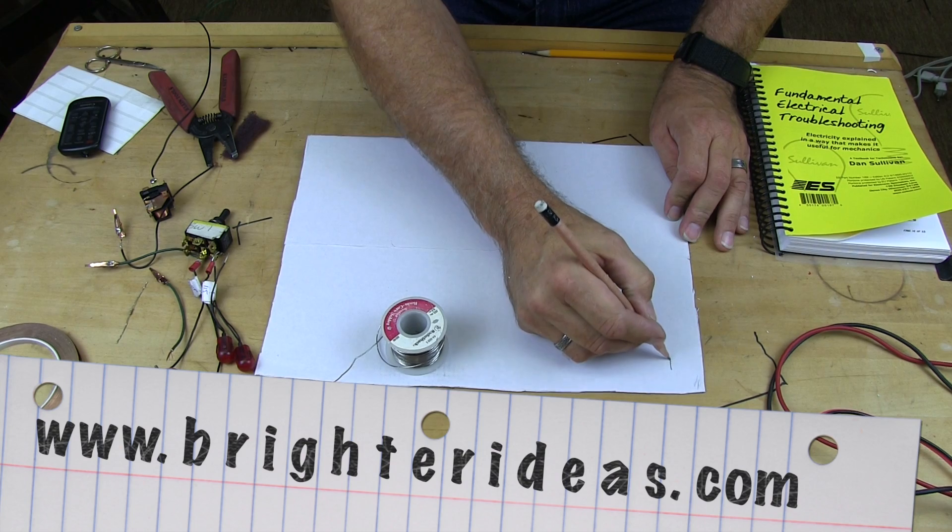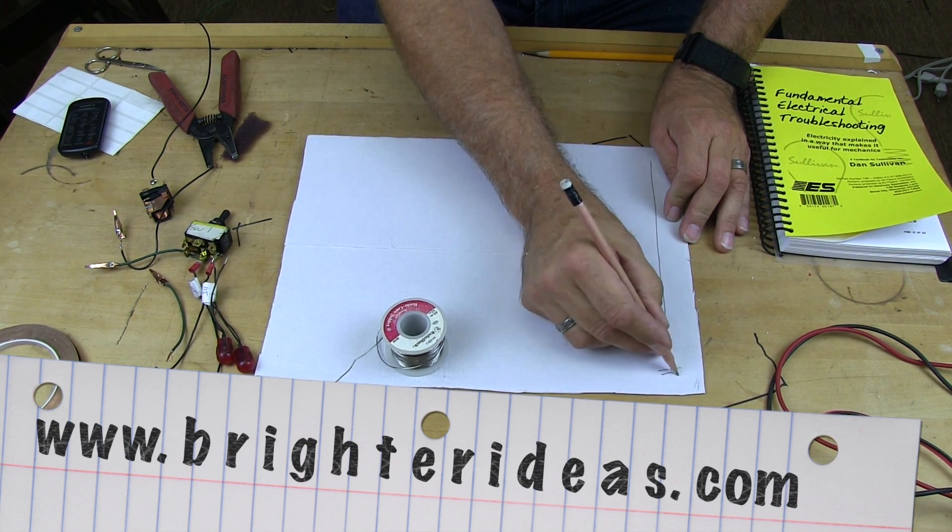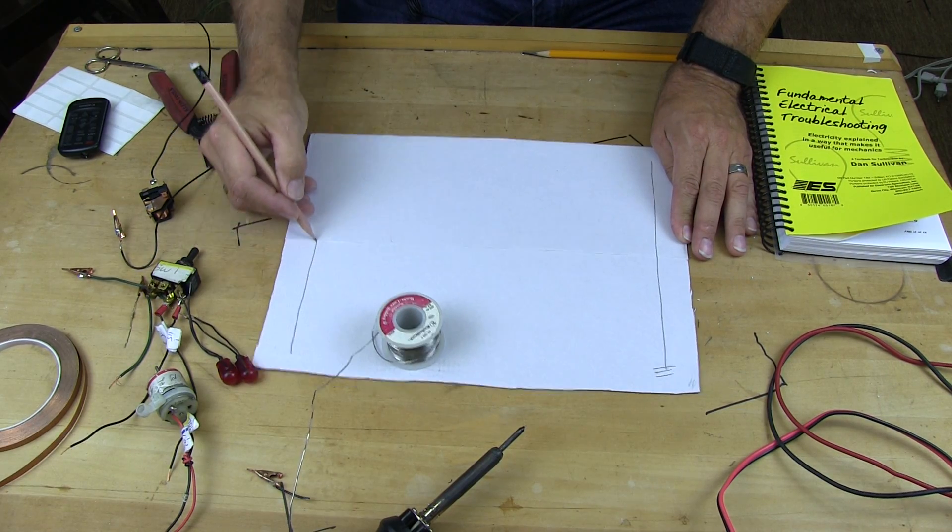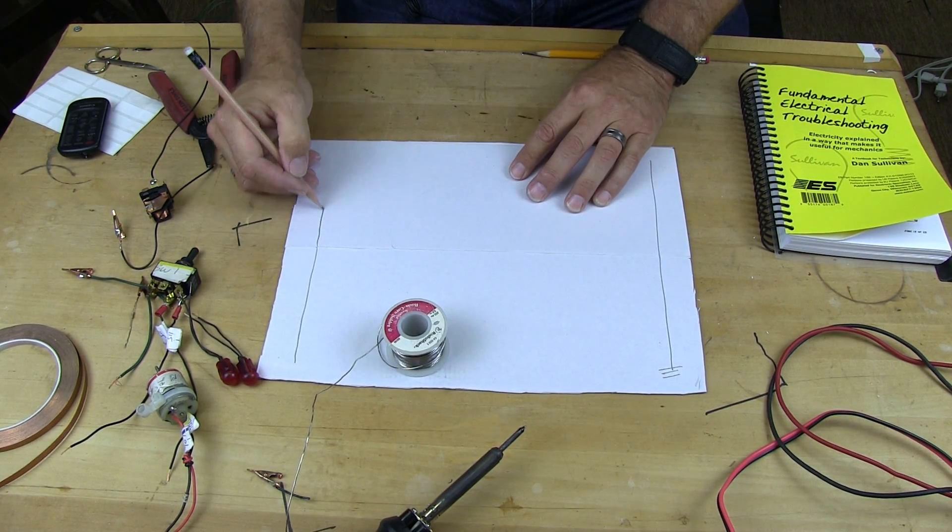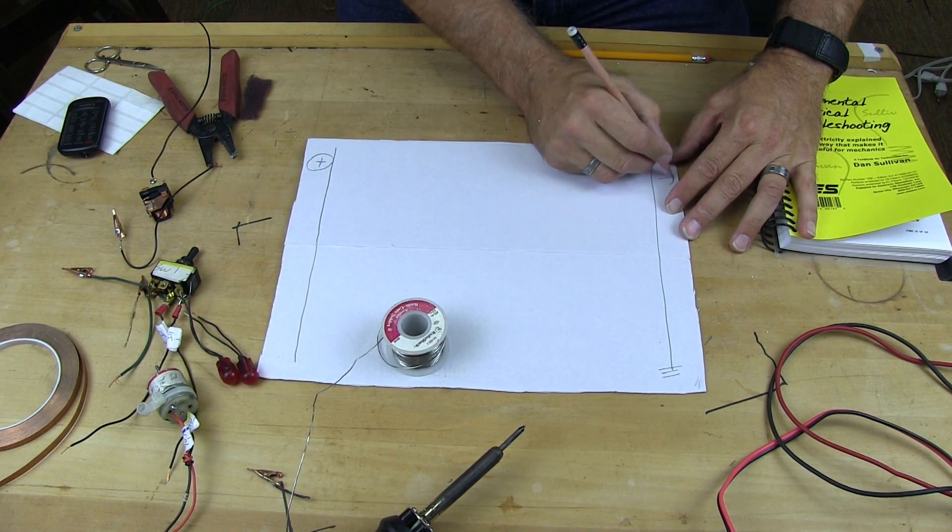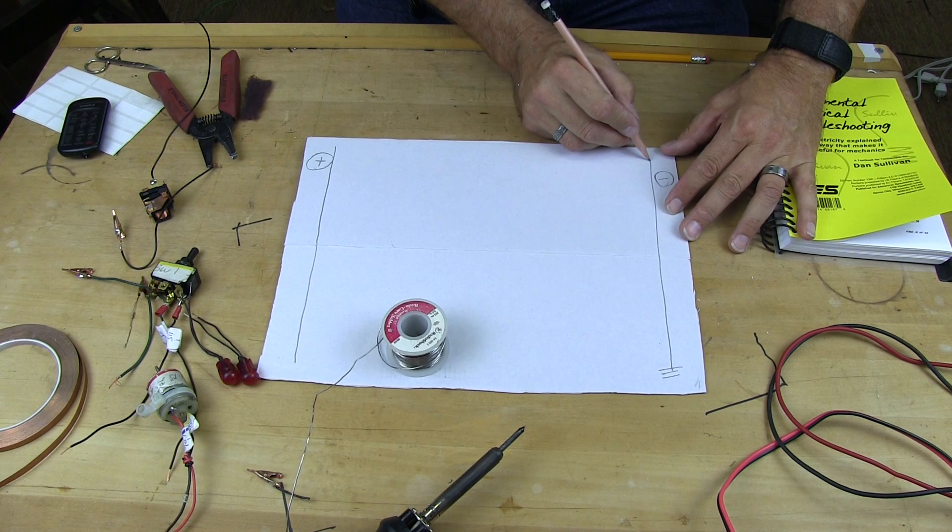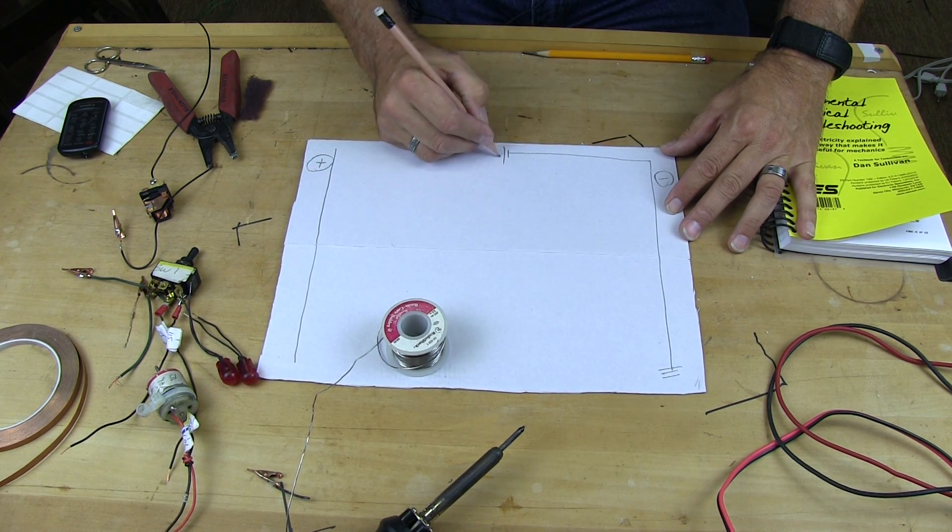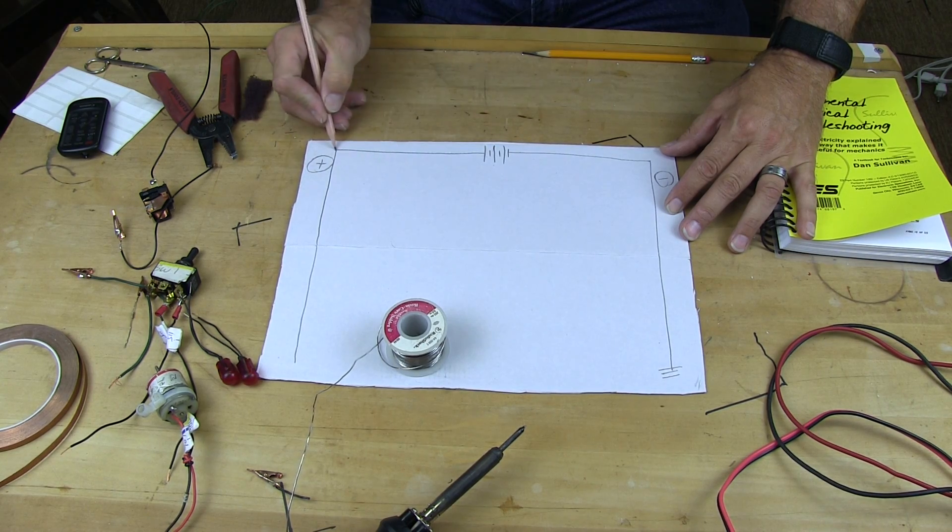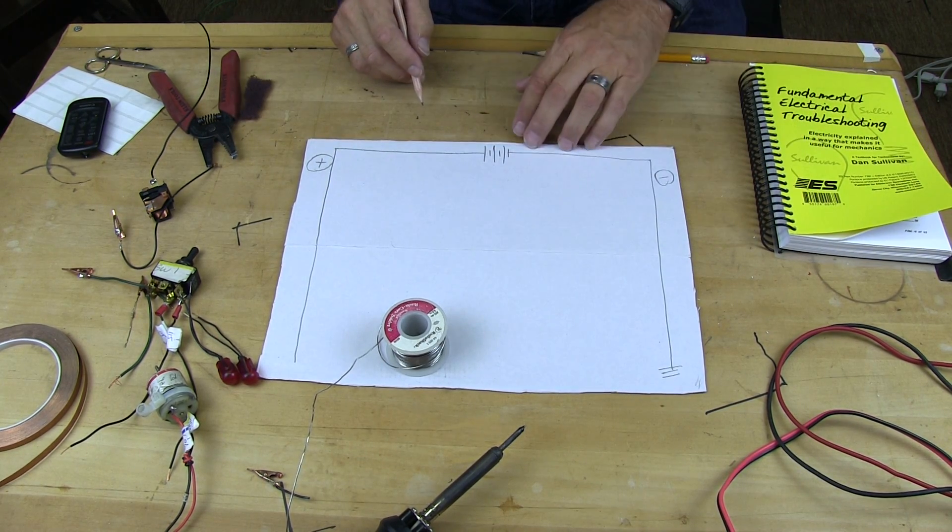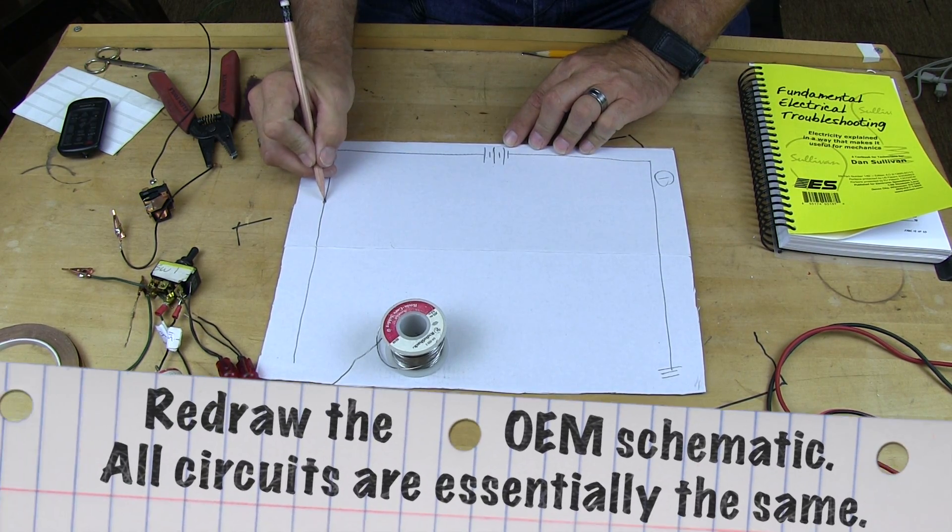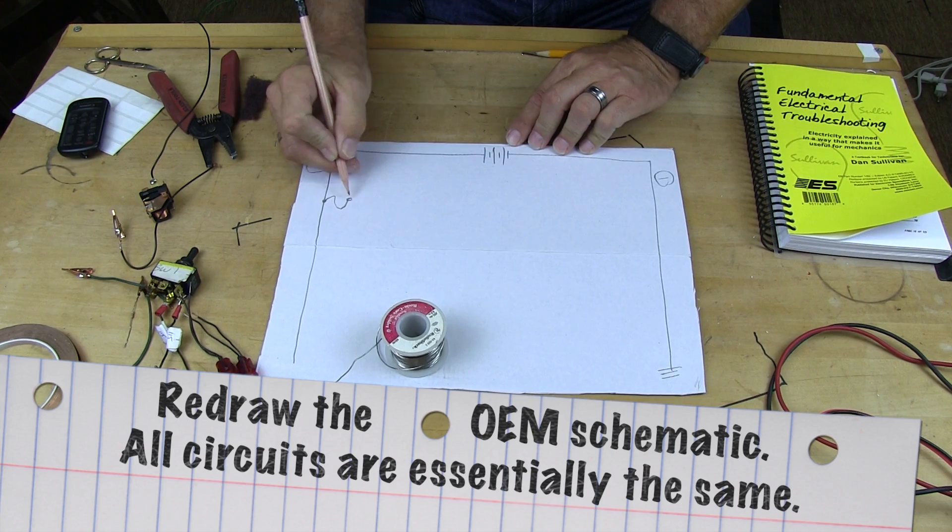I would suggest you do it as a ladder diagram so that everything on this side would be ground and everything on this side would be positive. In a ladder diagram, the top line is almost always the battery - that's what it would look like.